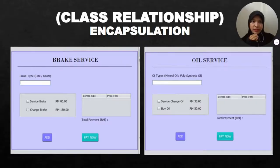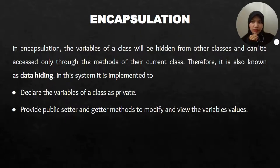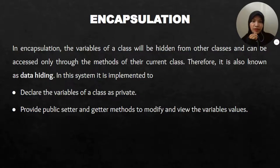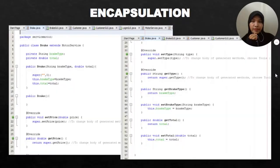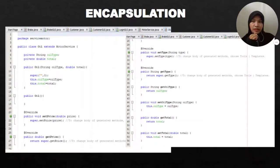For class relationships — encapsulation: the variable of a class will be hidden from other classes so that it can be accessed only through the methods of the current class, which is also known as data hiding. In this system, it is implemented by declaring the variables of a class as private and providing public set and get methods to modify and view the variable value. Both the brake and oil classes are using set and get methods.